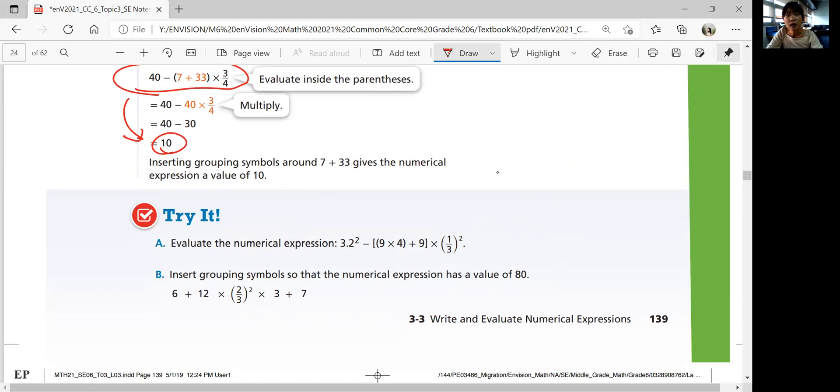So Part A. What do you do first? 9 times 4. That's 36. And then you solve inside the bracket still. 36 plus 9 is 45. And then what do you do?